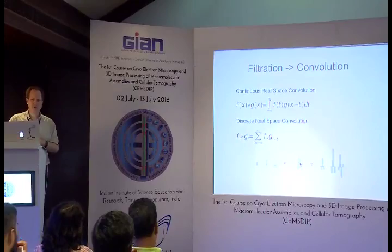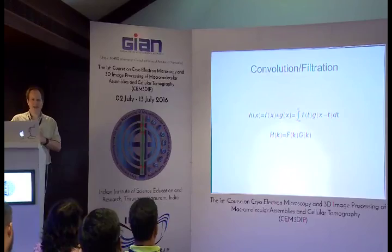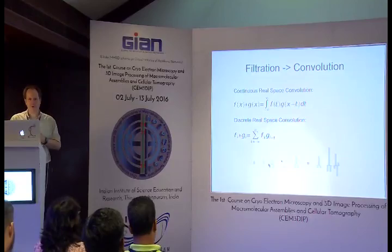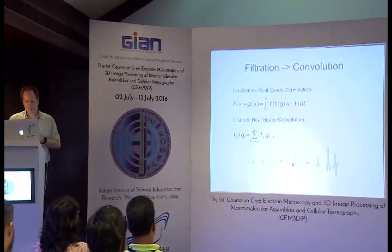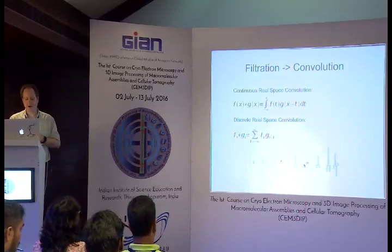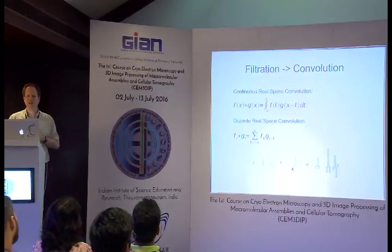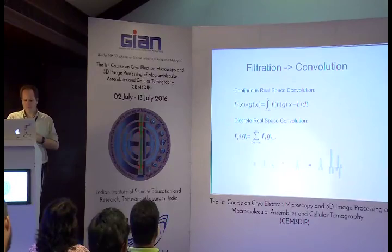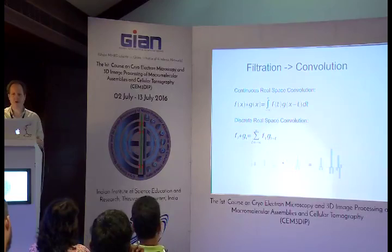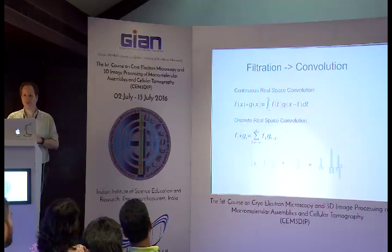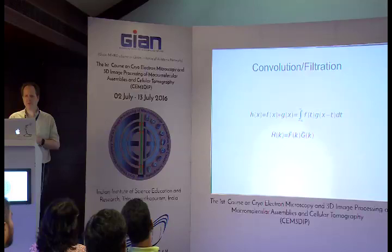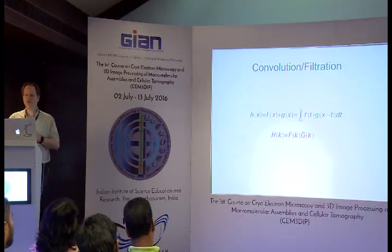One of the really interesting things about convolutions is their relationship to Fourier space. If you want to do a convolution in real space, it's expensive to do computationally. You have to go through every pixel in the image and multiply it by the corresponding value in the other image — that's what you'd call an order n-squared operation. Fourier transforms can be computed very quickly via an algorithm called the fast Fourier transform, in order n log n time. There's a logarithm involved which makes the computation much faster, so if we can do something in Fourier space, generally it's computationally efficient to do so.